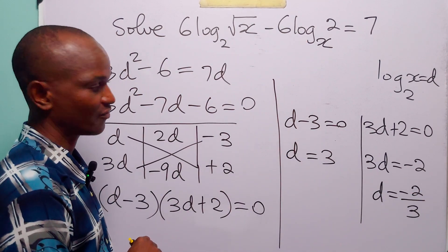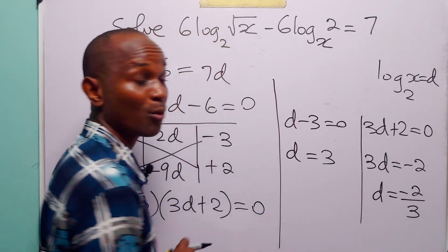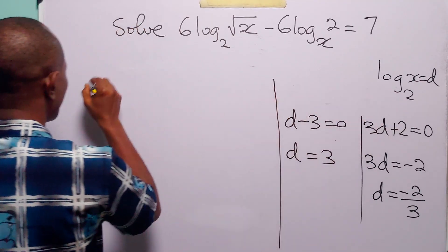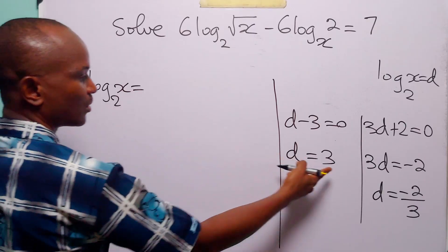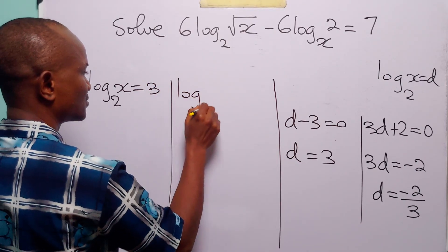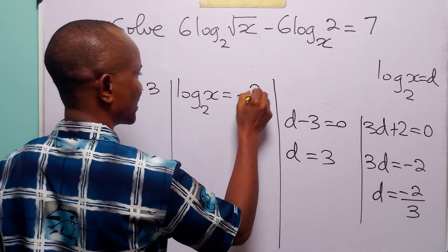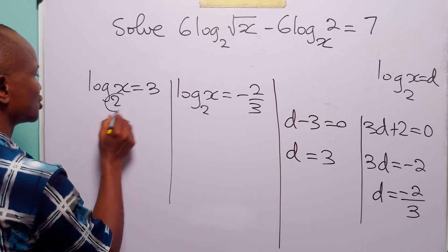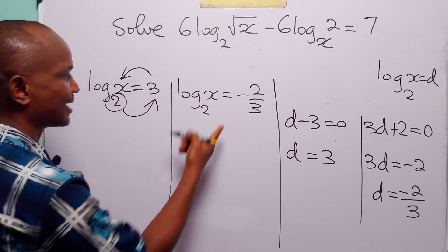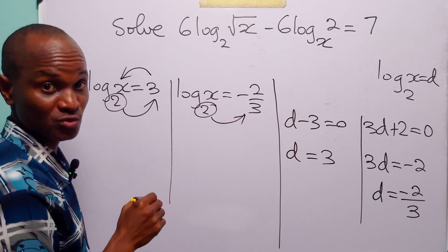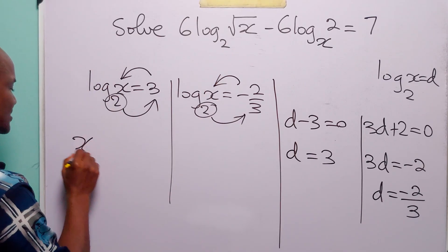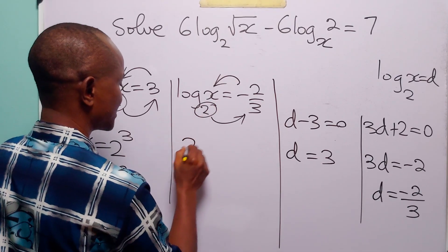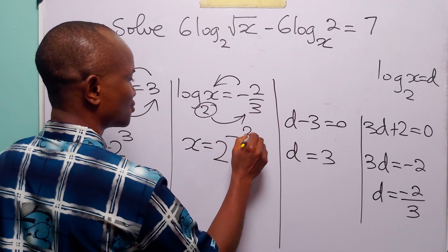So we have found two values of d: d equals 3 and d equals minus 2 over 3. Since d equals log to base 2 of x, this means log to base 2 of x equals 3 and log to base 2 of x equals minus 2 over 3. This means 2 to the power 3 equals x, giving x equals 8, and 2 to the power minus 2 over 3 equals x.